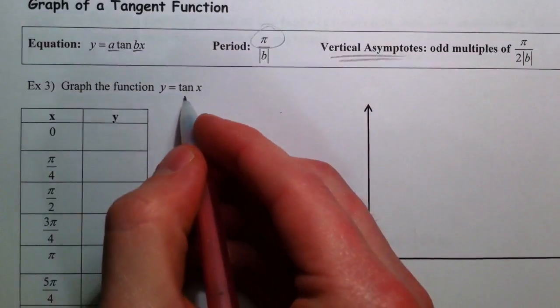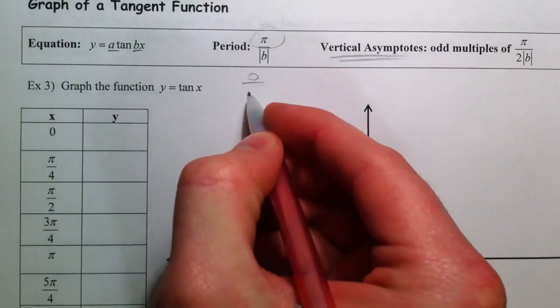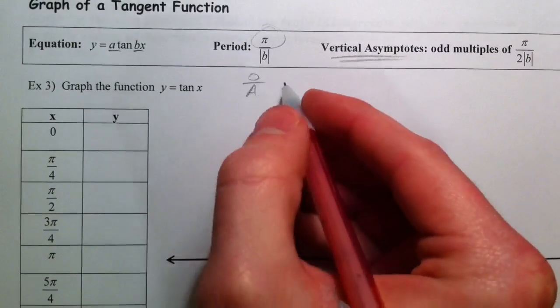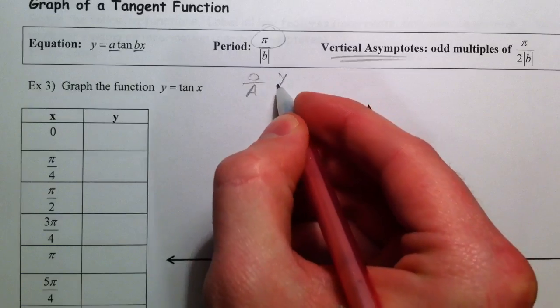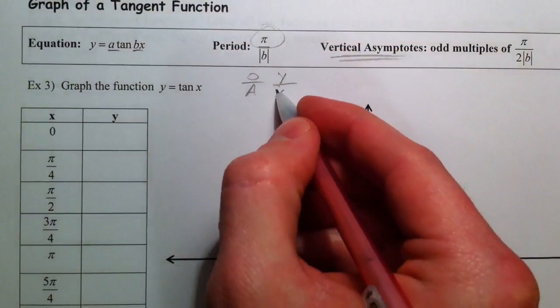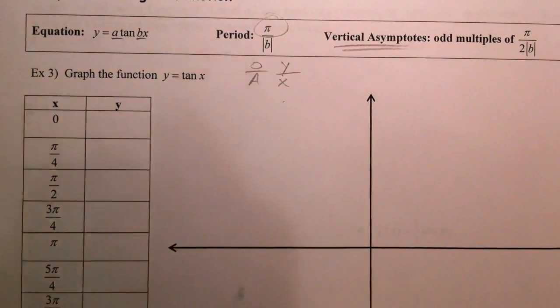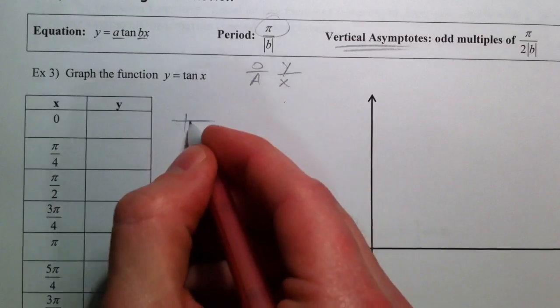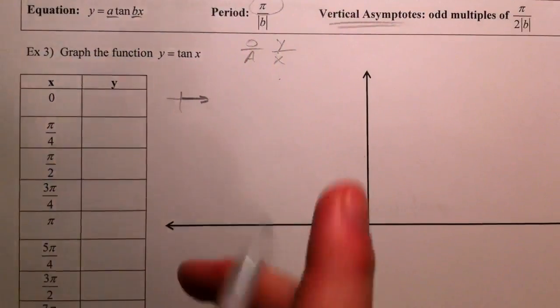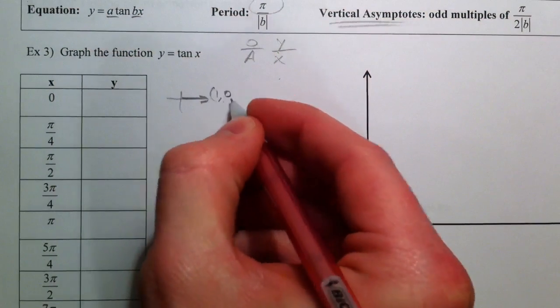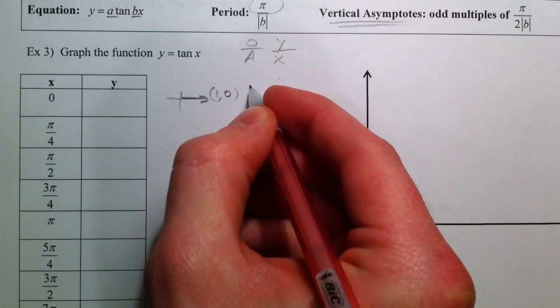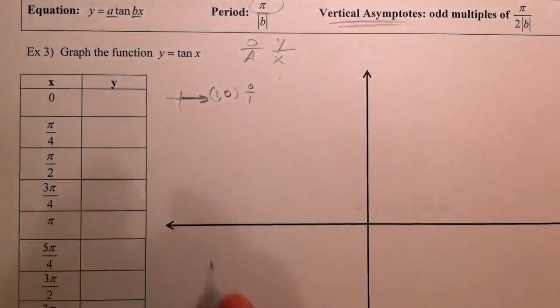Thing to remember, tangent was opposite over adjacent, or in terms of x and y, the opposite was the y and the adjacent was the x. Going straight across, this was 1, 0, so 0 divided by 1 was 0.